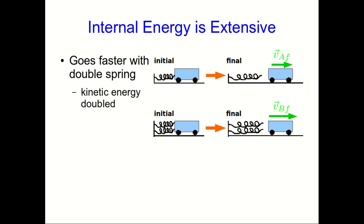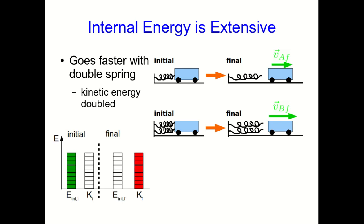Why do you double the kinetic energy? Well, apparently, using two springs doubled the internal energy of the system. And we converted all of that doubled internal energy into kinetic energy. And so that means internal energy is extensive, because when we doubled our springs, we got double the internal energy.